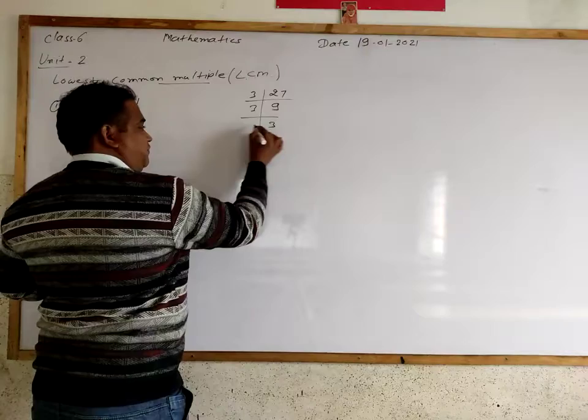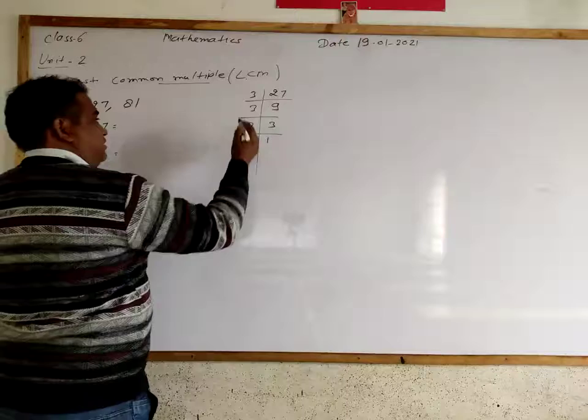We divide by 3, we get 9. Again we divide by 3, we get 3. Again we divide, we get 1. Now the complete factorization is this.